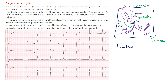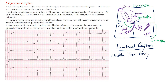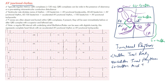The ventricular rate determines the name of the junctional rhythm. Less than 40 bpm is junctional bradycardia. Between 40 and 60 bpm — the intrinsic rate — is a junctional rhythm, which is what we're discussing here. Between 60 and 100 bpm is an accelerated junctional rhythm. Over 100 bpm is junctional tachycardia. Our focus here is the junctional rhythm at its normal intrinsic rate.